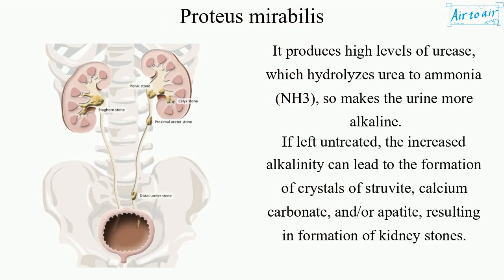It produces high levels of urease, which hydrolyzes urea to ammonia (NH3), making the urine more alkaline. If left untreated, the increased alkalinity can lead to the formation of crystals of struvite, calcium carbonate, and/or apatite.